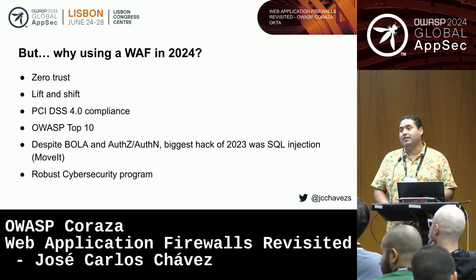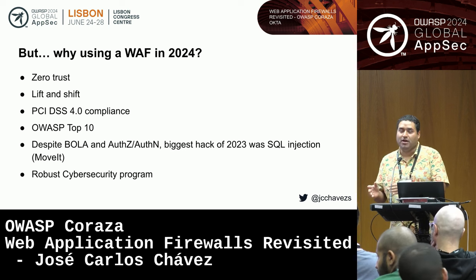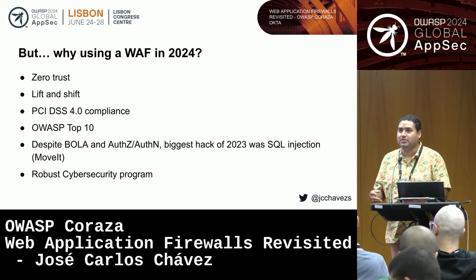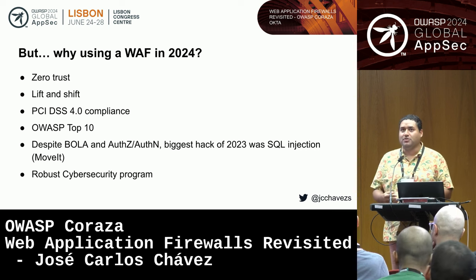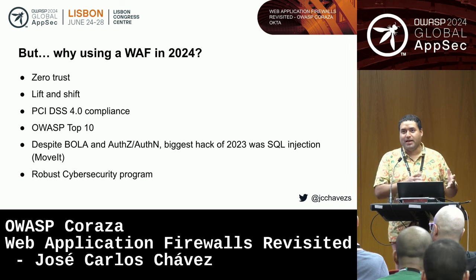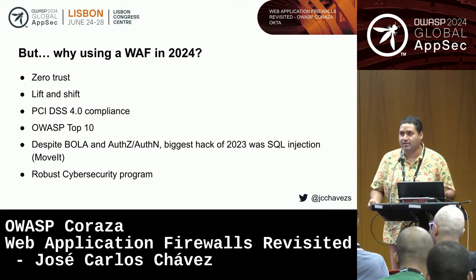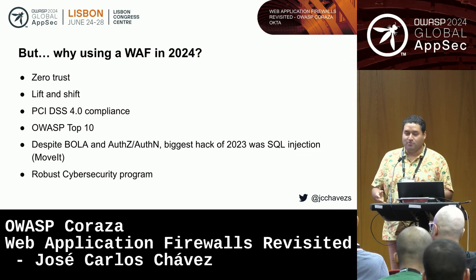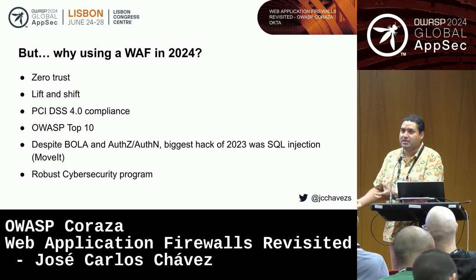Lift-and-shift is another reason. We want to move legacy applications into the cloud, but without rebuilding them. When you move an application as-is, you also move all the existing vulnerabilities along with the artifact. The way to protect them is to put a WAF in front — you can protect the application without changing it at all.